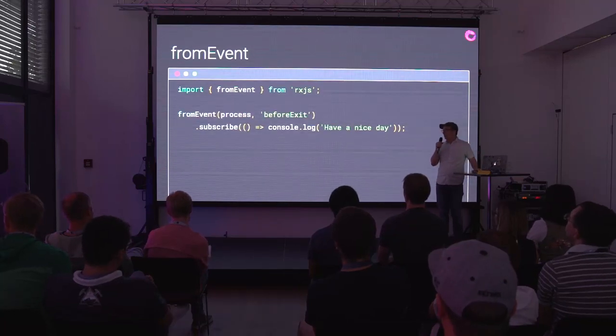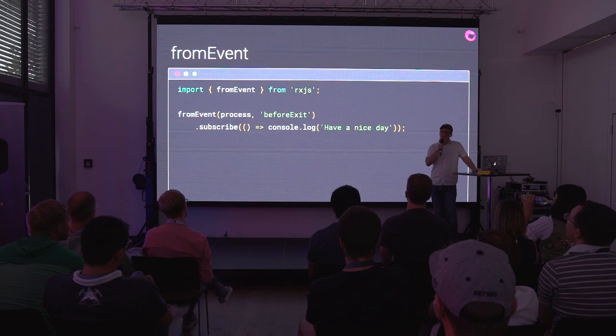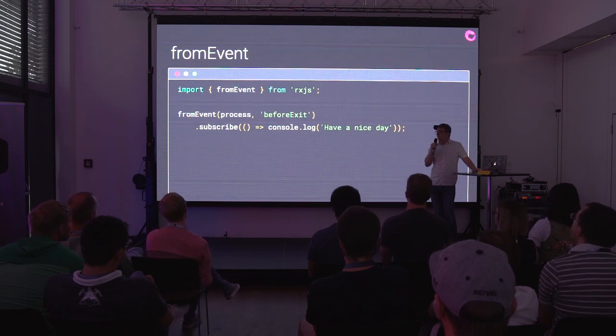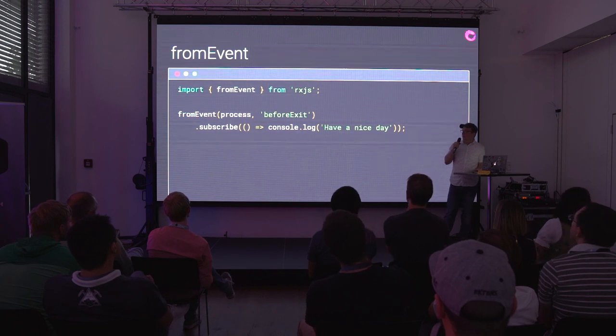For example, you could say process.on before exit — process.on is actually an alias for addListener. So process has addListener and removeListener, and you can create an observable from that. You can create an observable from streams, which have addListener and removeListener. The request object from an HTTP server has event emitter implemented on it as well.